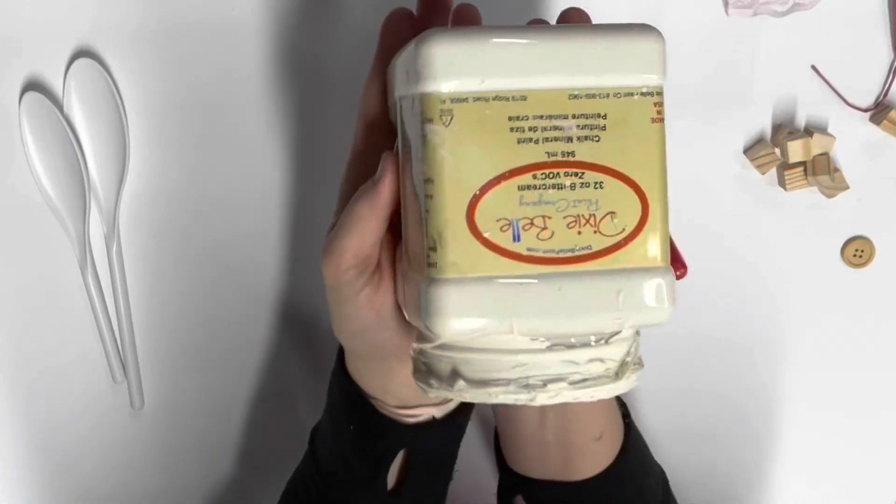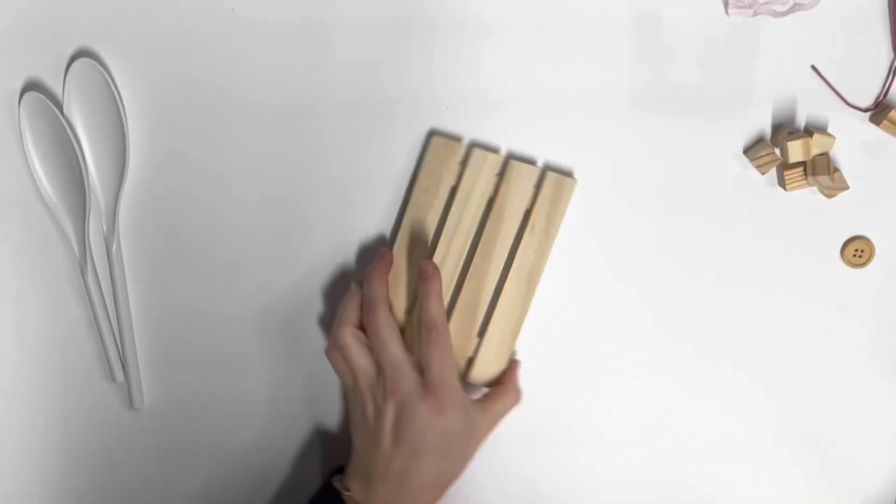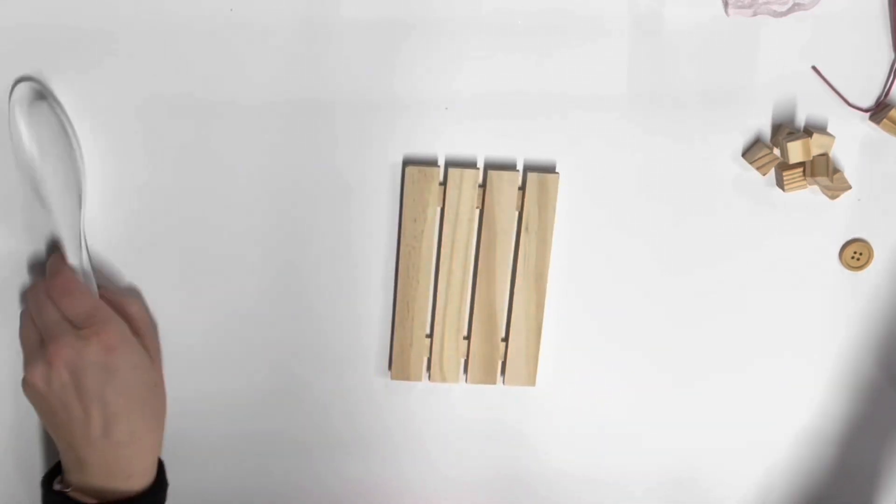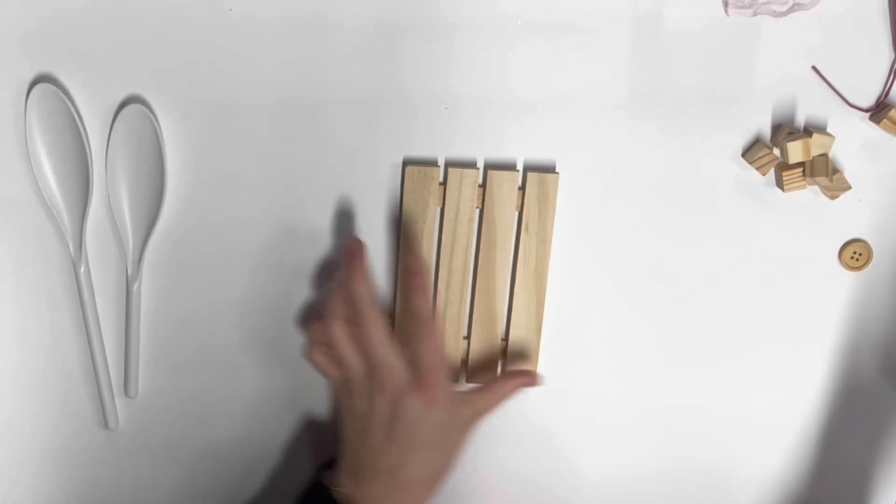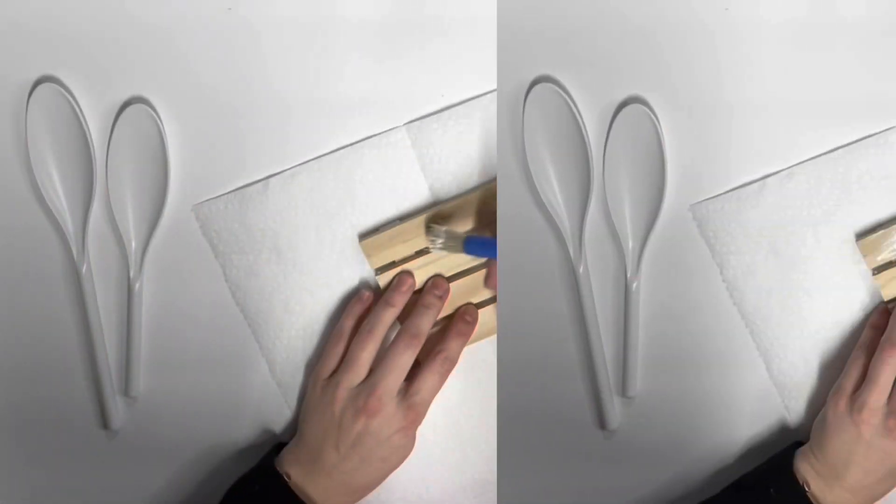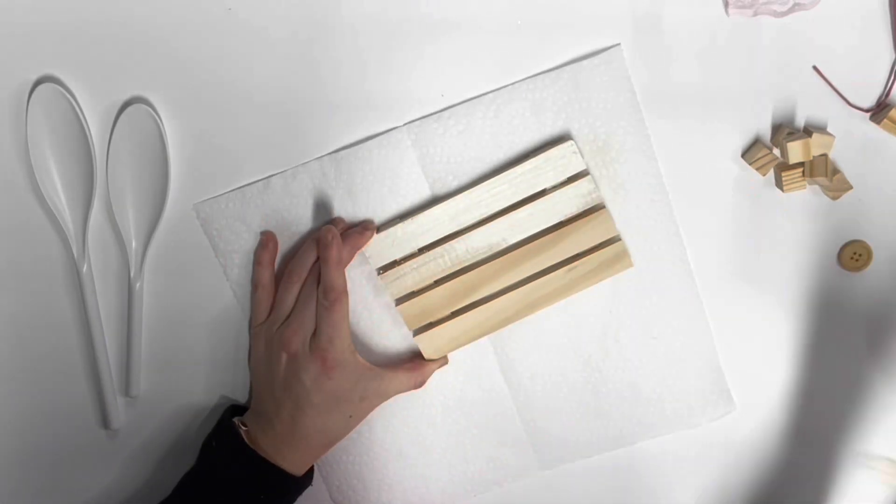So for this first DIY, you're going to need some paint. I used buttercream by Dixie Belle and then you're going to need this little palette board from Dollar Tree and then these two spatulas that come in a pack of four also from Dollar Tree. First, I just painted it a real rough coat of the buttercream. I mean, like I didn't even try to get a full coverage coat.